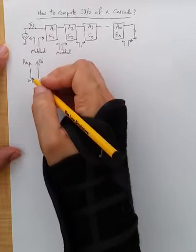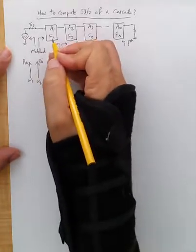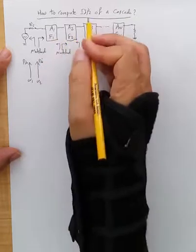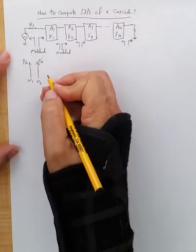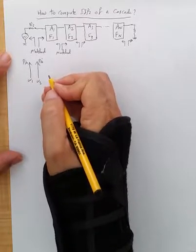We know that when this passes through the first stage, because of the non-linearity of the first stage, depending on the IIP2 of the first stage, it will generate intermodulation product, including the second order intermod.